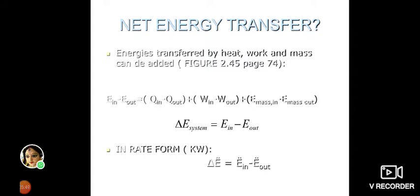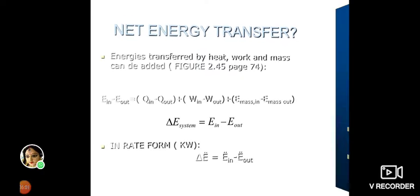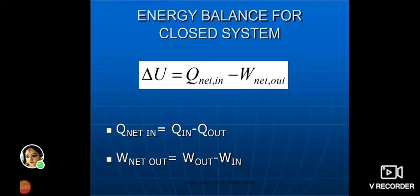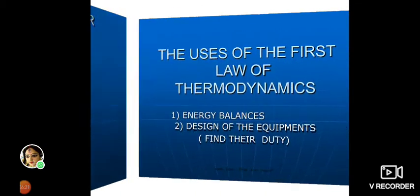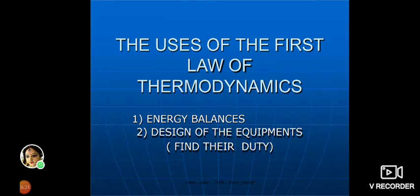The net energy of the system is E_in minus E_out. In rate form, ΔE = ΔE_in minus ΔE_out. For a closed system, the energy balance is: ΔE = Q_net,in − W_net,out, where Q_net,in = Q_in − Q_out and W_net,out = W_out − W_in.